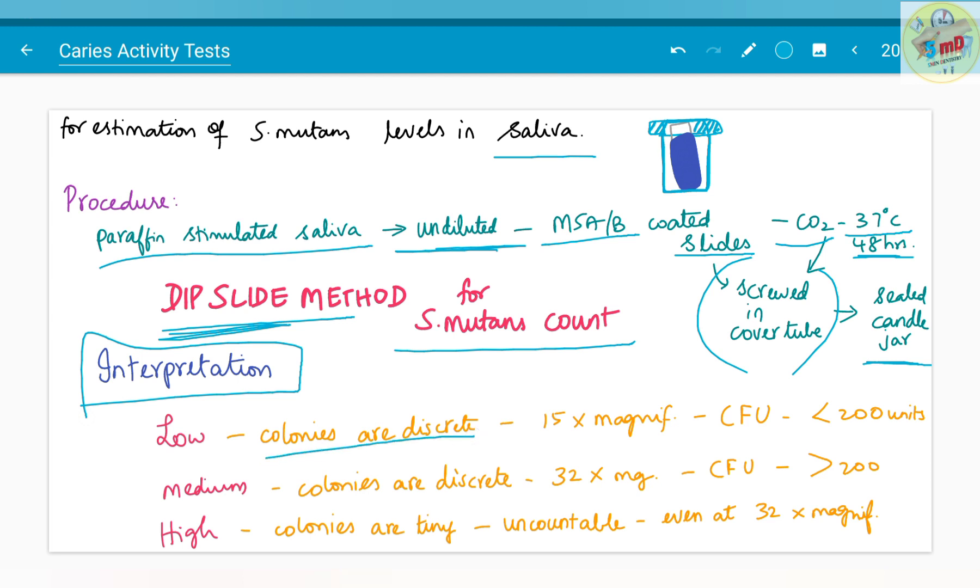Interpretation is given as follows: If the colonies are discrete and under 15x magnification the colony forming units observed are less than 200, then the caries activity is low. If the colonies are decreased but under 32x magnification the CFU are greater than 200, then the caries activity is medium. If the colonies are very tiny and uncountable even at 32x magnification, then the caries activity is termed as high.